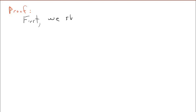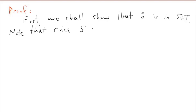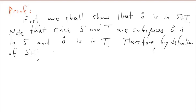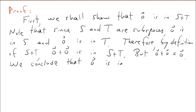Here's our proof. First, we show that zero is in S plus T. Since S and T are subspaces, zero is in S and zero is in T. Therefore, by definition of S plus T, zero plus zero is in S plus T. But zero plus zero equals the zero vector, so we conclude that zero is in S plus T. This finishes the first part of our proof.